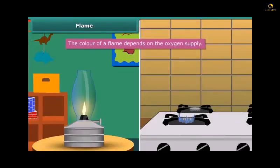When we look at a flame of kerosene lamp it is yellow in color but the flame of a kitchen stove is blue. It is interesting to know that the color of a flame depends on the oxygen supply. If the oxygen supply is less, flame will appear yellow due to incomplete combustion of fuel. And if it is more, the flame will appear blue due to complete combustion of fuel.